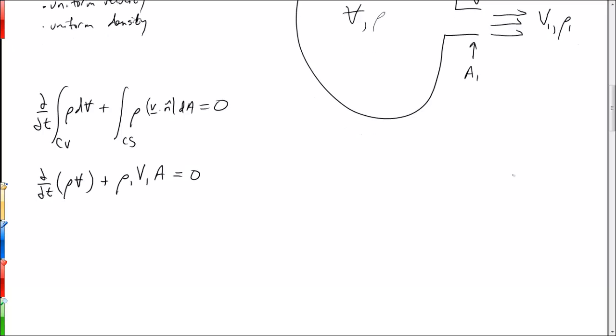So because the volume is not changing with time we can take that outside of the derivative and then we can solve for the change in density over time d rho/dt and that's just going to be equal to minus rho1 v1 A over the volume of the container